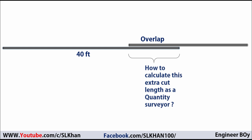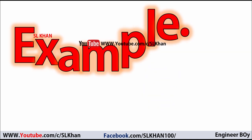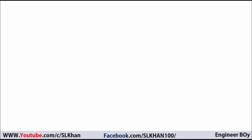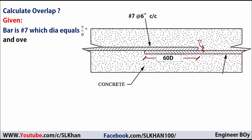Now, how do we calculate the exact value of overlap length? For this approach, I'm gonna do an example. Let's say we got this drawing, and we're asked to work out the extra cutting length for overlap. In the drawing, as you can see, the diameter and overlap specifications are given, where the bar is number 7 and the overlap is 60D.